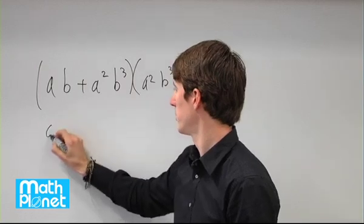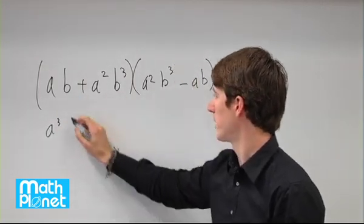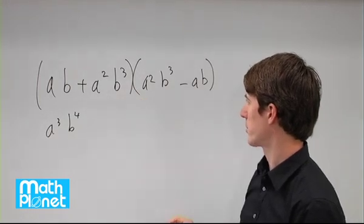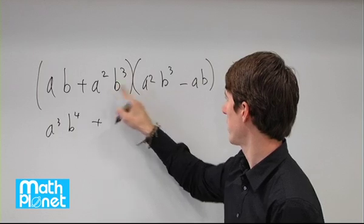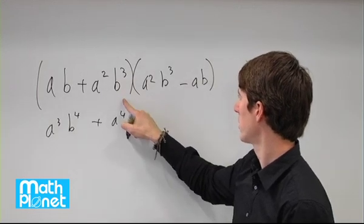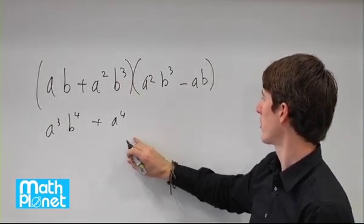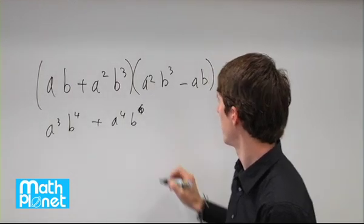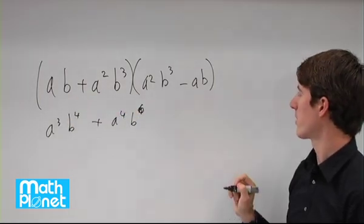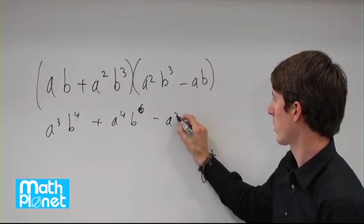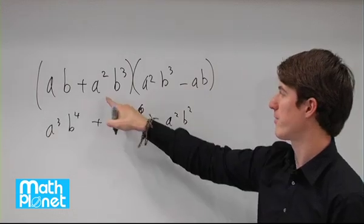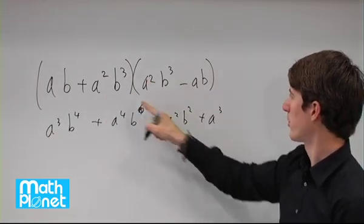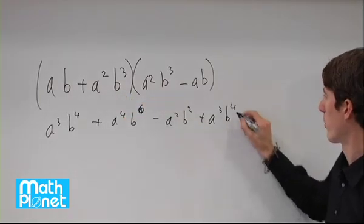So we have a cubed times b to the power of 4, plus the internal terms here, so plus a to the power of 4 times b to the power of 6, and then the outer terms: a times b minus a times b, so minus a squared times b squared, and then finally the last terms: a to the power of 3 times b to the power of 4.